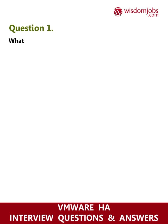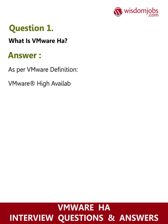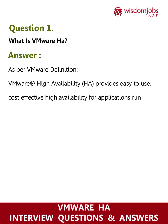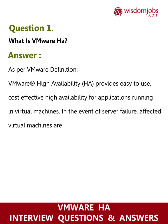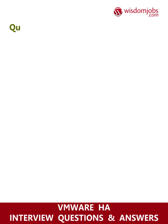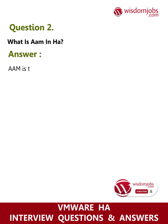Question 1: What is VMware HA? Answer: As per VMware's definition, VMware High Availability (HA) provides easy-to-use, cost-effective high availability for applications running in virtual machines. In the event of server failure, affected virtual machines are automatically restarted on other production servers with spare capacity.